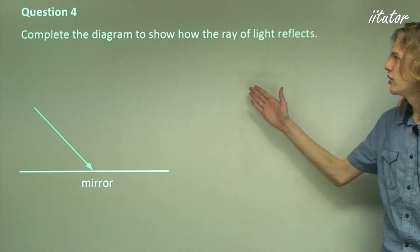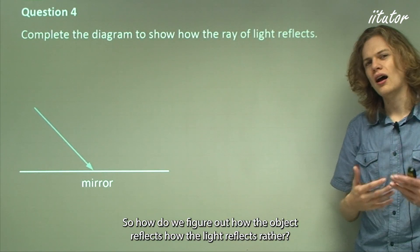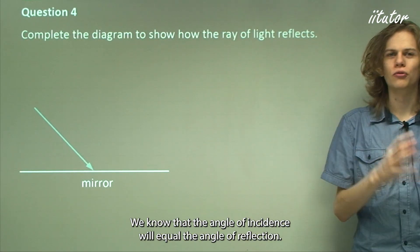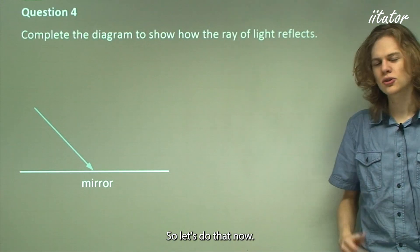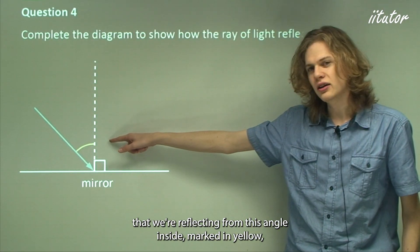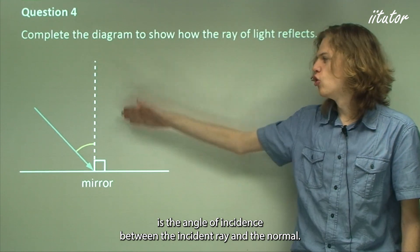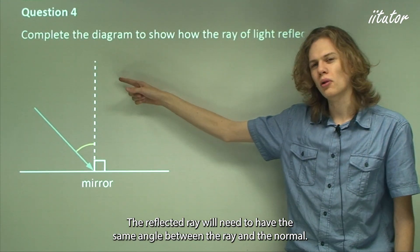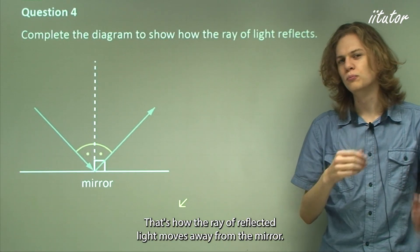Question 4: Complete the diagram to show how the ray of light reflects. We have an incoming ray and a mirror. We know the angle of incidence equals the angle of reflection, so the best approach is to draw a normal — a line perpendicular to the surface of the mirror at the point of reflection. The angle inside, marked in yellow, is the angle of incidence between the incident ray and the normal. The reflected ray must have the same angle between the ray and the normal on the other side — and that's our answer.